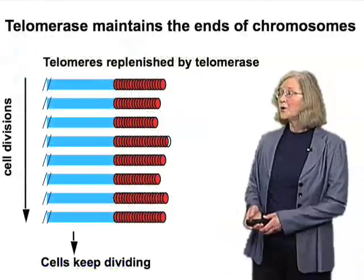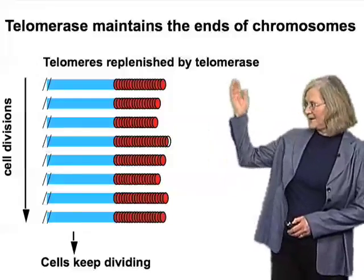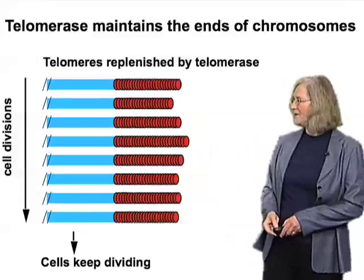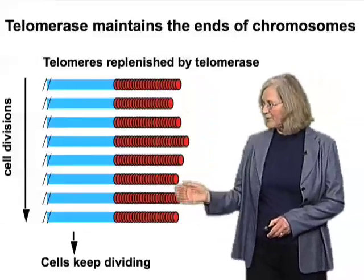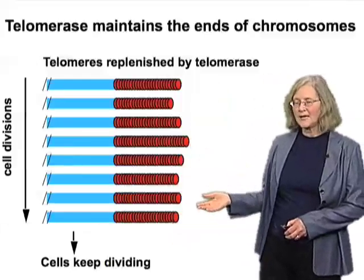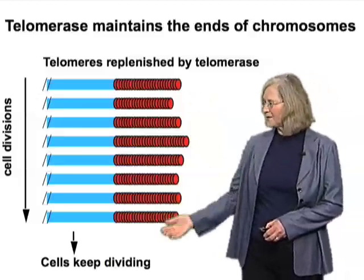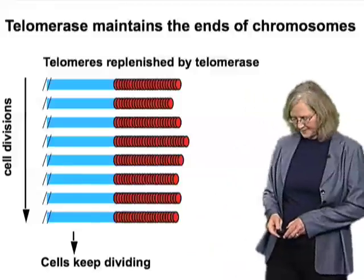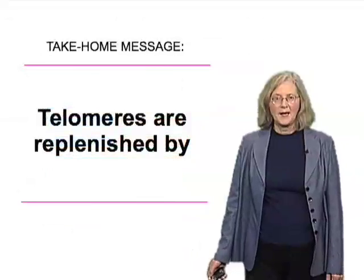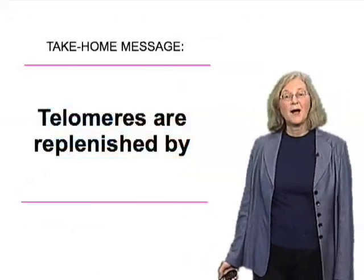The conclusion is that telomerase maintains the ends of chromosomes. Telomeres are replenished by telomerase as cells keep dividing. That continuing replenishment, even in the face of continuing shortening processes, can compensate for those shortening processes and allow the cells to keep on dividing. Telomeres are replenished by telomerase — that's the important message.